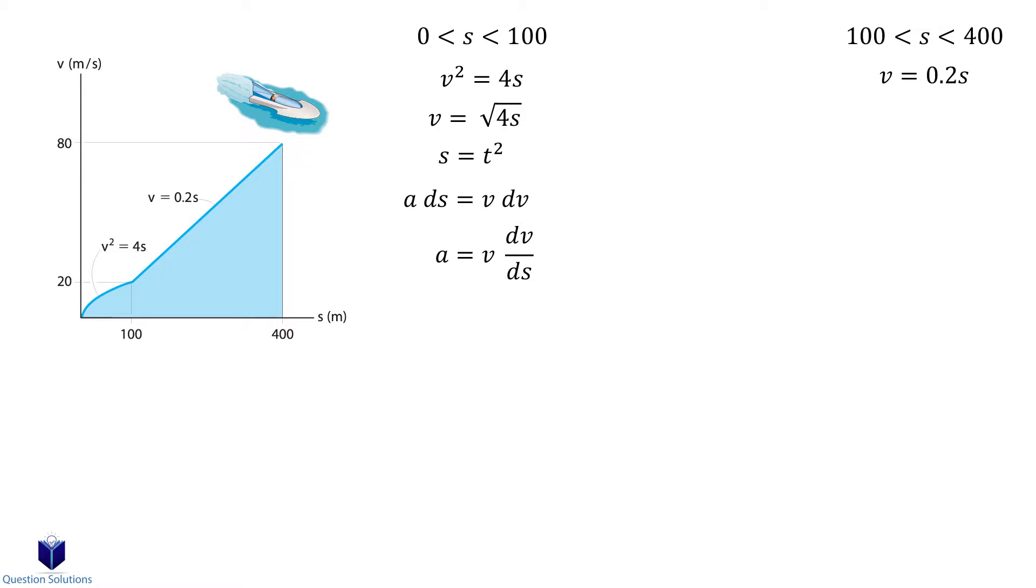That means we need to take the derivative of our velocity equations. For the first segment we have 1 over square root s. Now it's just substituting values into our equation. So v is equal to square root 4s and the dv over ds part is 1 over square root s. Solving gives us 2 meters per second squared.